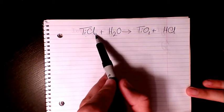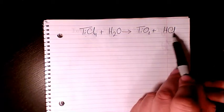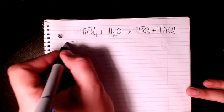Chlorine is four in the reactant side and one in the product side. So we need to have four here to balance chlorine.